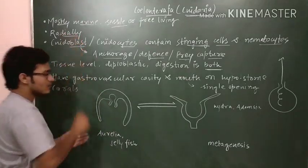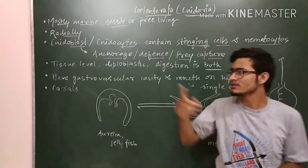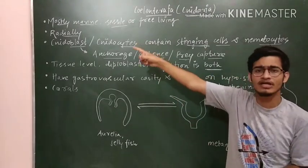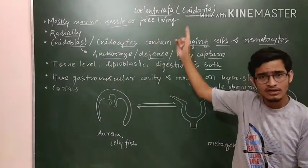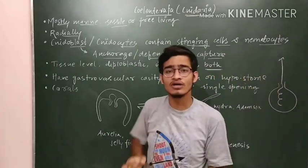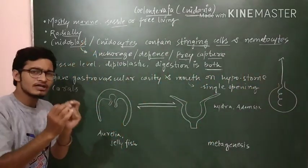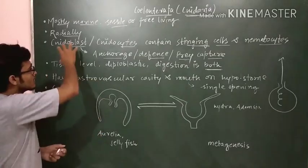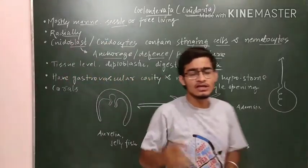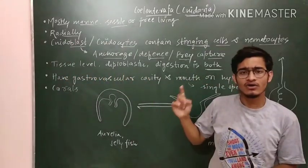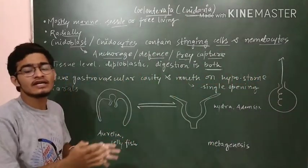Regarding symmetry, there are only three phylums which possess a radially symmetrical body plan: Coelenterata, Ctenophora, and adult Echinoderms - which is an exception. The nidocytes or nidoblasts, which contain nematocysts, are present on the tentacles of the body.